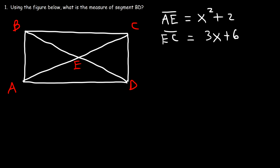In example one, our goal is to determine the measure of segment BD given expressions for AE and EC. Since the diagonals bisect each other, E is the midpoint of AC, which means AE and EC are equal to each other. So we set their expressions equal.